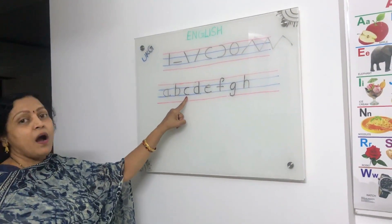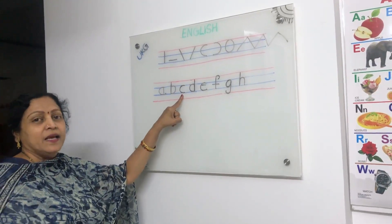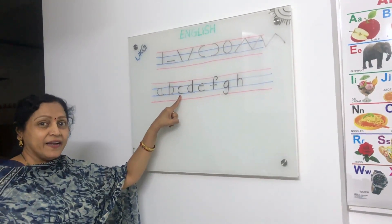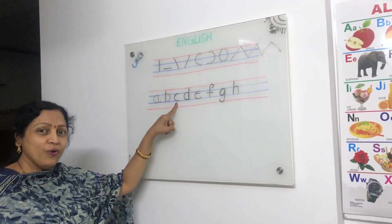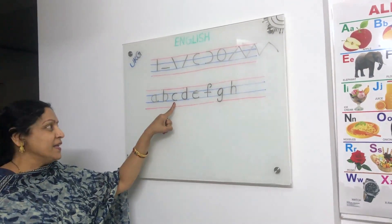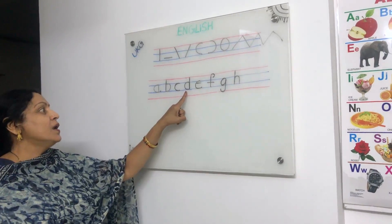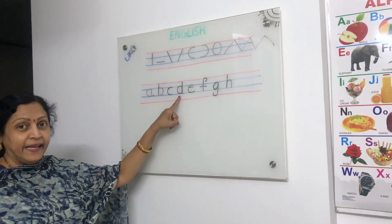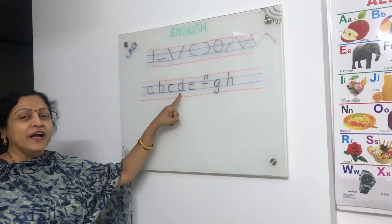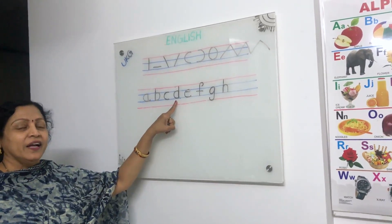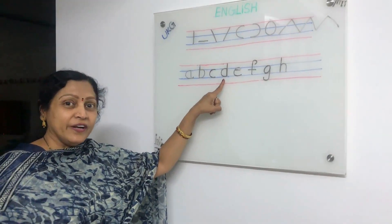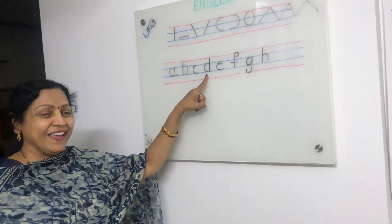This is small C. C for cat, caterpillar, cow. This is small D. D for dog, doll, dolphin.